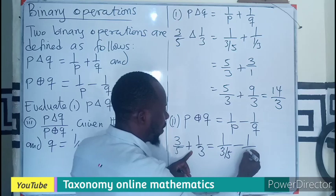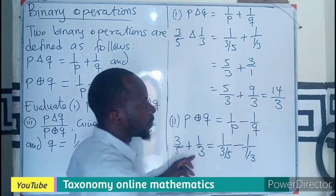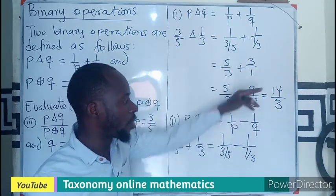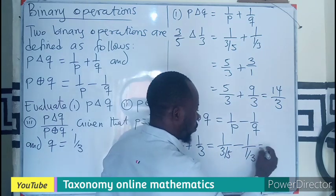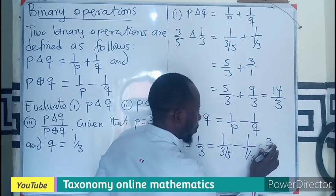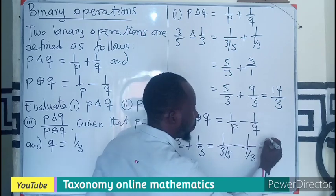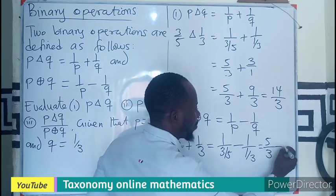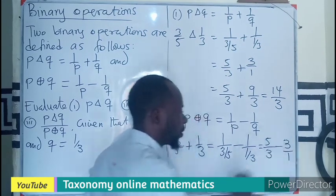So we have 1 over the P value, which is 3 over 5, minus 1 over Q value, 1 over 3. From the explanation we have from the top here, we can change this to become 5 over 3. And again, the 3 will go up to become 5 over 3 minus 3 over 1.